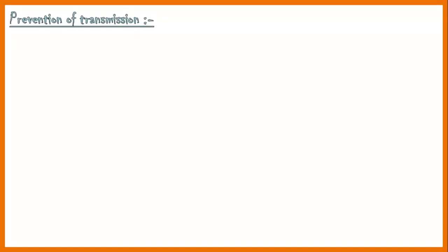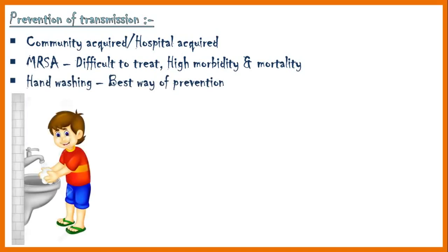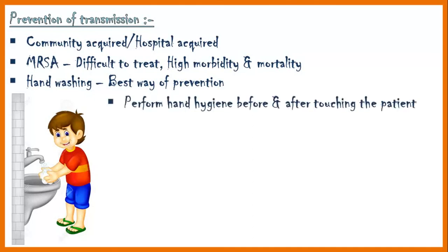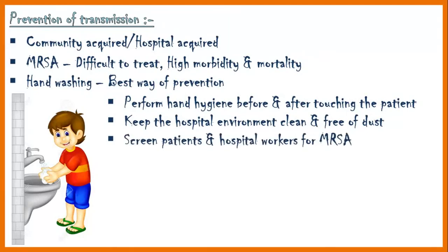Finally, let's come to the prevention of staph infections. Staphylococcal infection can be acquired from the community or hospital environment. Treatment of MRSA infection is highly difficult, and they carry a high morbidity and mortality rate. Hand-washing is the best way of prevention. In addition, if you are a healthcare provider, perform hand hygiene before and after touching the patient. Keep the hospital environment clean and free of dust, and screen patients and hospital workers for MRSA.